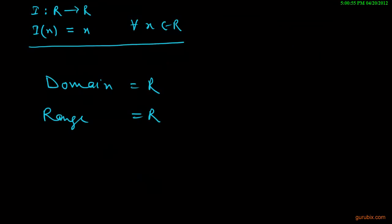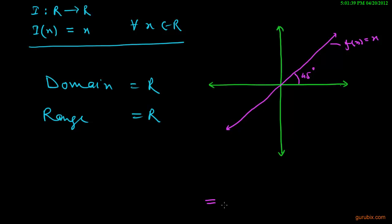And as far as the graph of this function is concerned, it is very easy to learn. Suppose these are our coordinates, these are our axis, x-axis and y-axis. And if we draw a straight line which makes an angle of 45 degree with this x-axis here. So this is the graph of f(x) equals to x. So this is all about identity function.